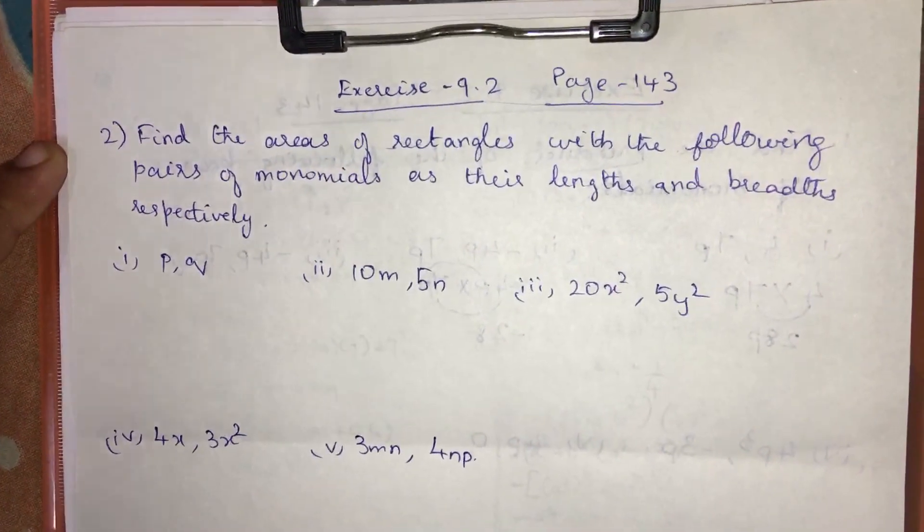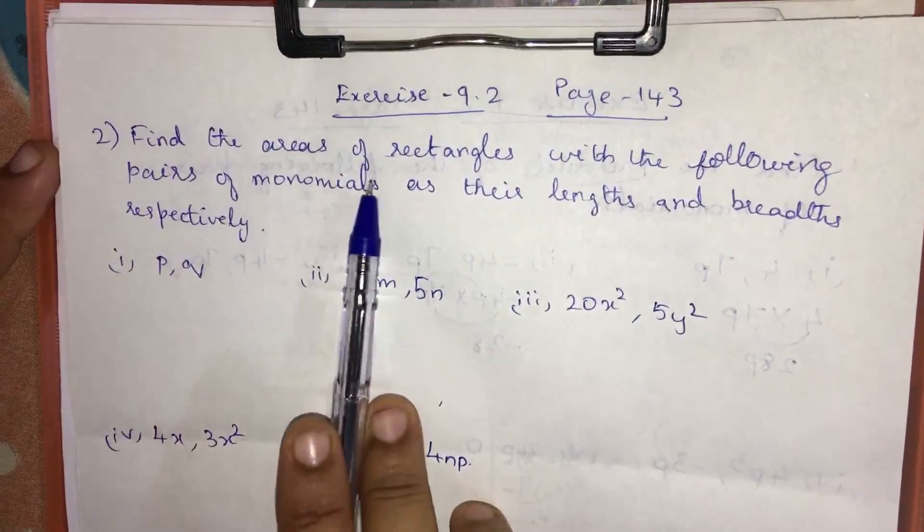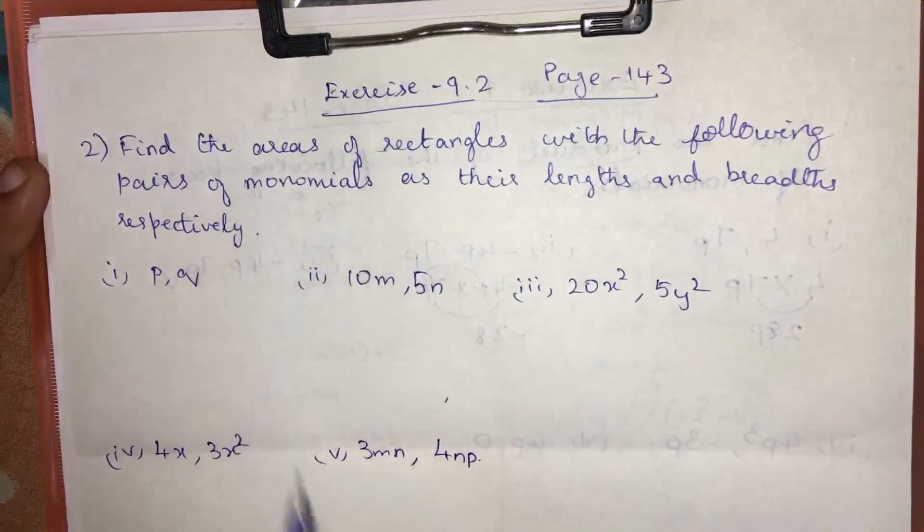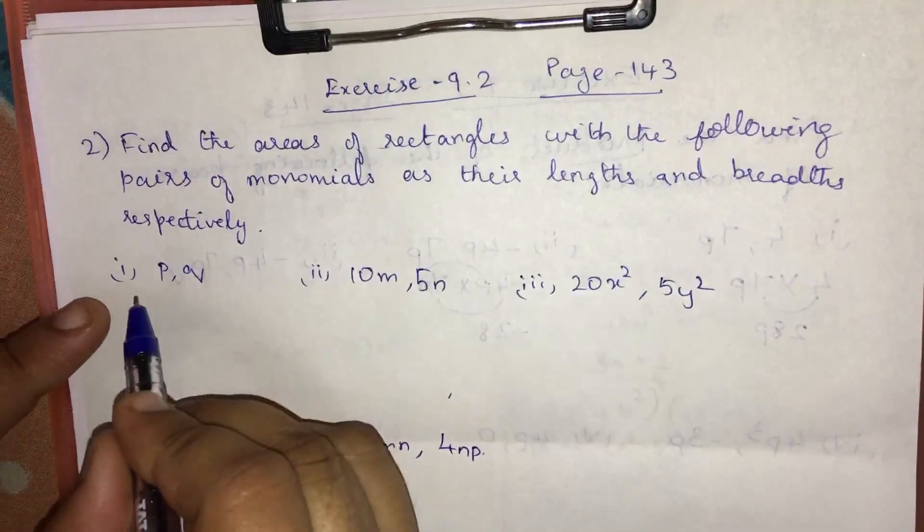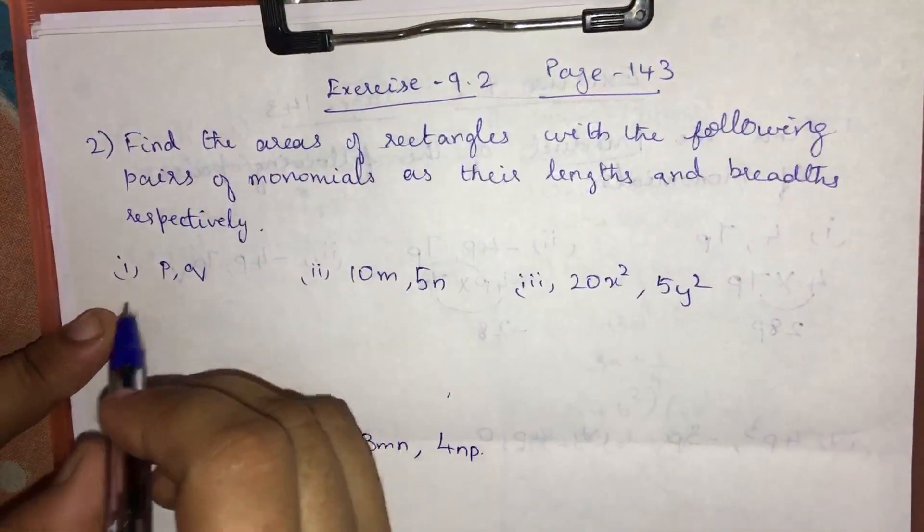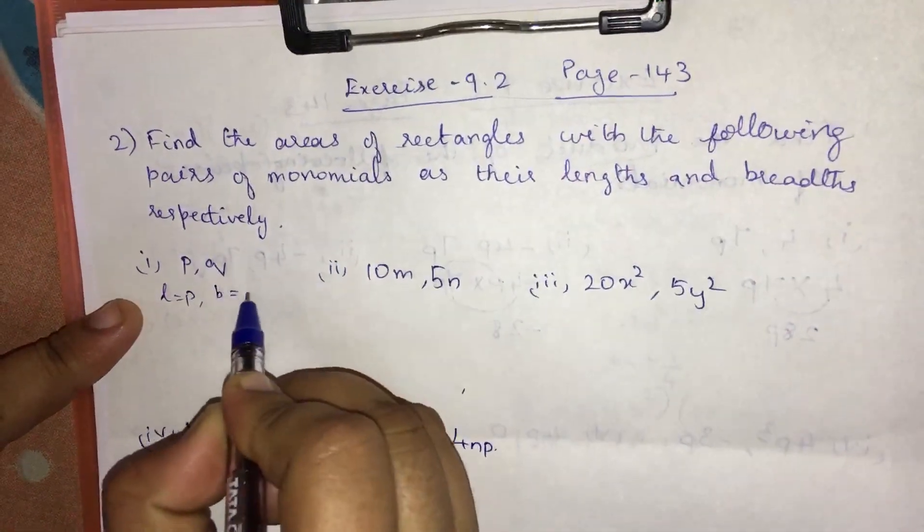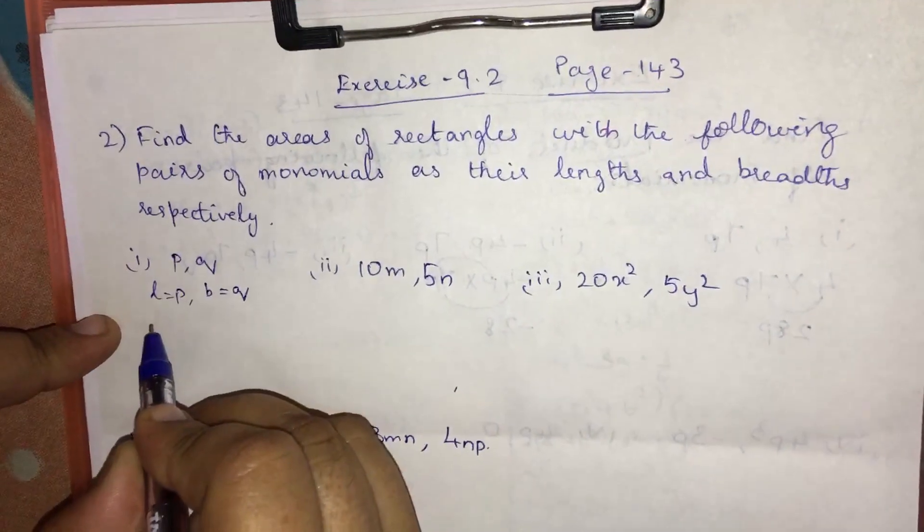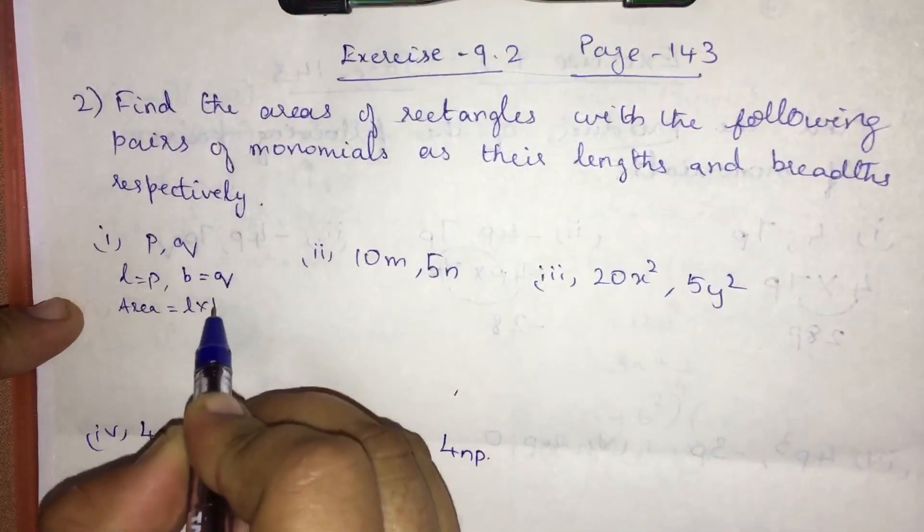Problem number 2. Exercise 9.2. Find the areas of rectangles with the following pairs of monomials as their lengths and breadth respectively. Problem number 1: p comma q. The length is p and the breadth is q. As per the area of the rectangle, area is equal to length into breadth.